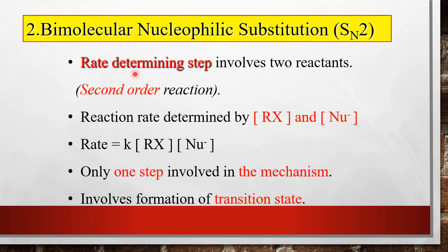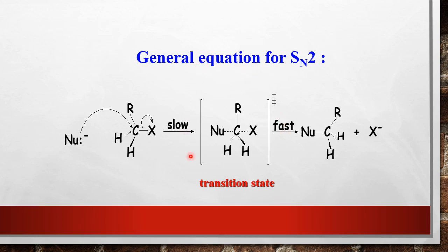For SN2 bimolecular nucleophilic substitution, both the haloalkane and nucleophile are in the rate-determining step — hence second-order reaction. Only one step mechanism, forming a transition state. The general SN2 mechanism: nucleophile performs backside attack, bond forming for nucleophile, bond breaking for C-X simultaneously. Label this as a transition state (slow step). Must note negative, positive, positive charges. Product has inverted configuration. This is the fast step once transition state collapses.